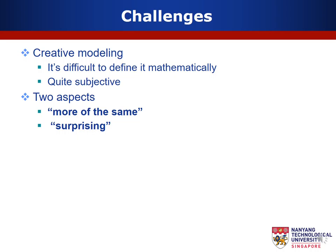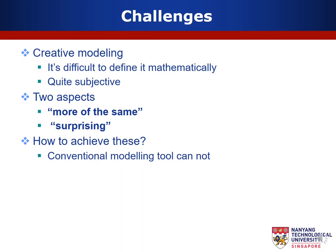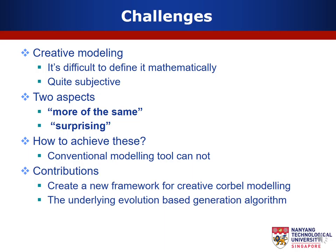We convey two aspects of meaning: more of the same and surprising. We want the generated models to be more of the same as examples, particularly retaining architectural structure and the geometry styles of cobalts. Meanwhile, we want the generated models to contain elements of surprises or unexpectedness, which brings inspirations to the designer. These two goals actually conflict with each other, which thus imposes challenges. Our work tries to create a tool which helps users to easily come up with these creative ideas. The major contribution of the paper lies in a new framework for creative cobalt modeling and its underlying evolution-based generation algorithm.